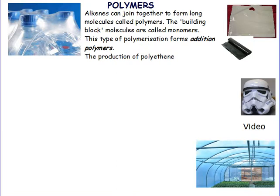Polymers, as we've said, can be made from alkenes being joined together in long molecules. These molecules can be hundreds of thousands of carbons long.